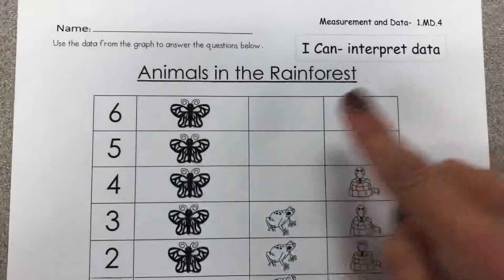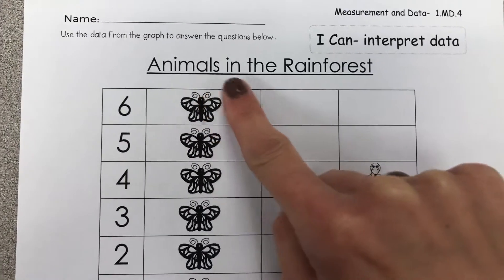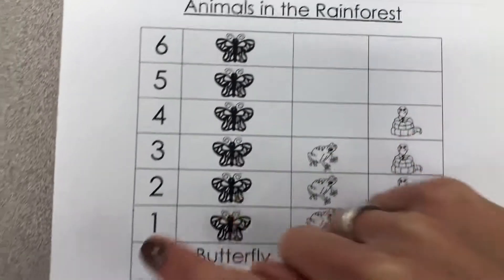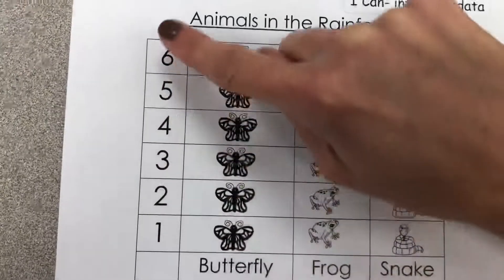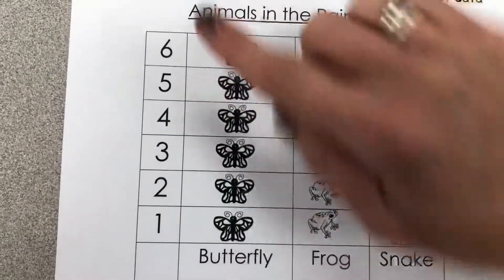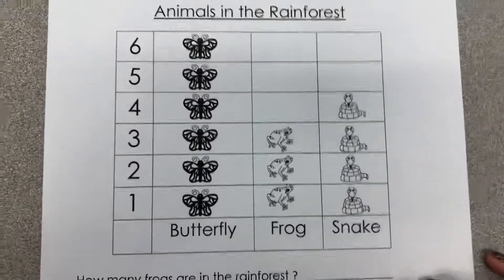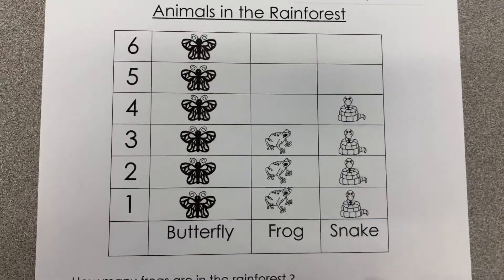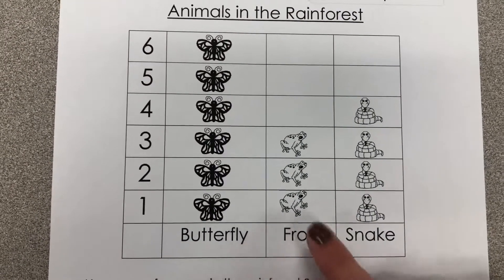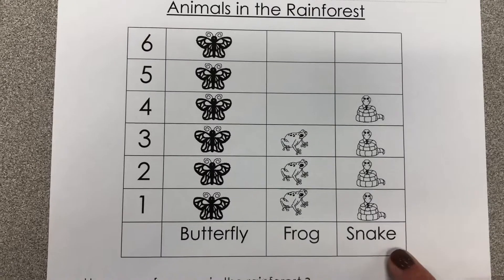This is our graph. The title of our graph is 'Animals in the Rainforest.' Along this side, it tells us the number of animals, and then along the bottom, it gives us the different animals that are in the rainforest. We have butterflies on our graph, frogs, and snakes.